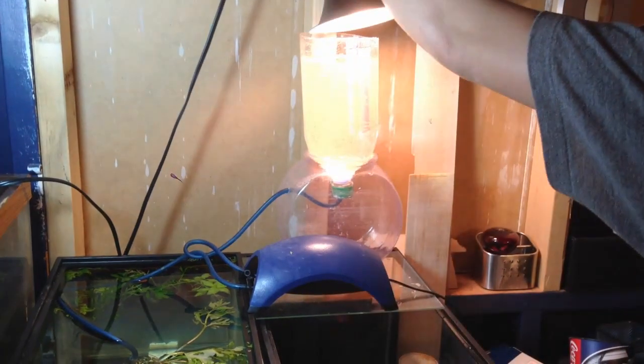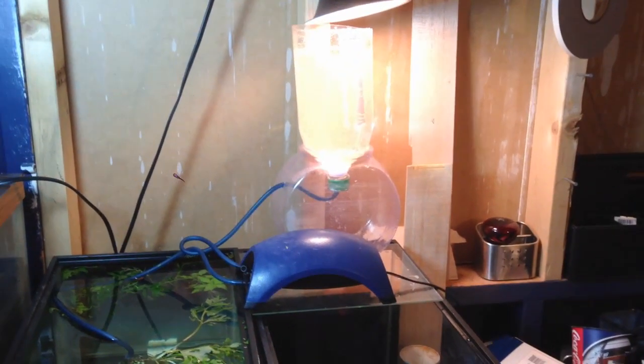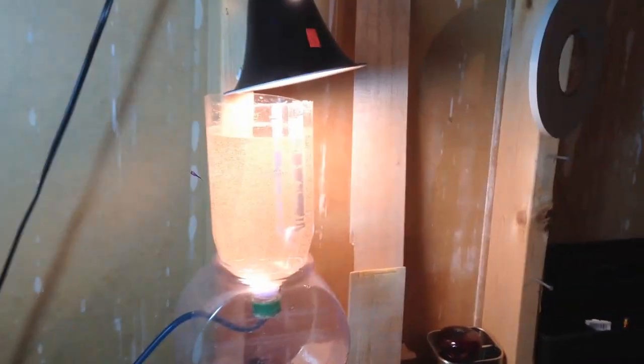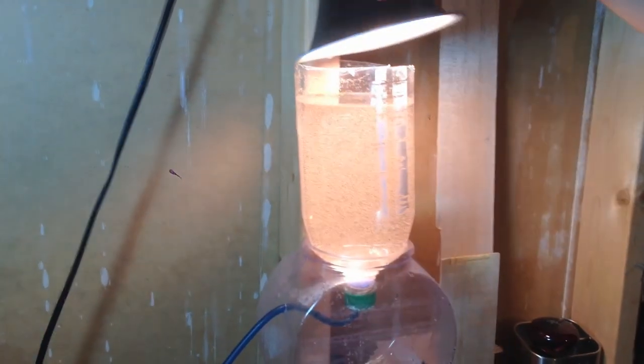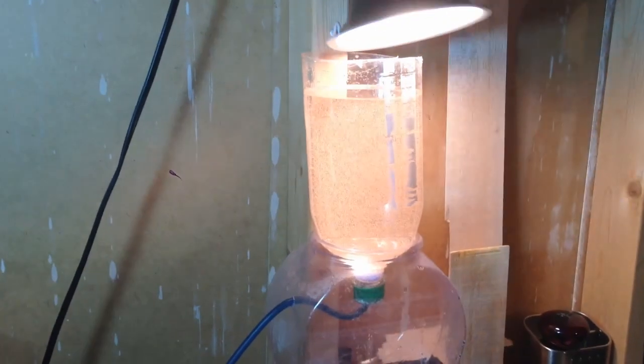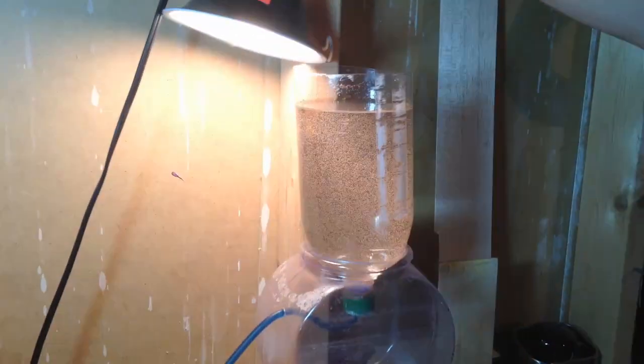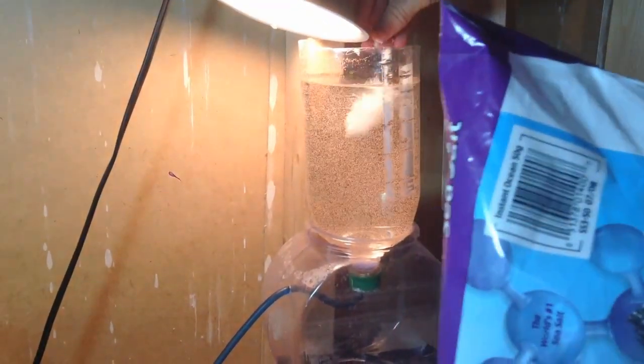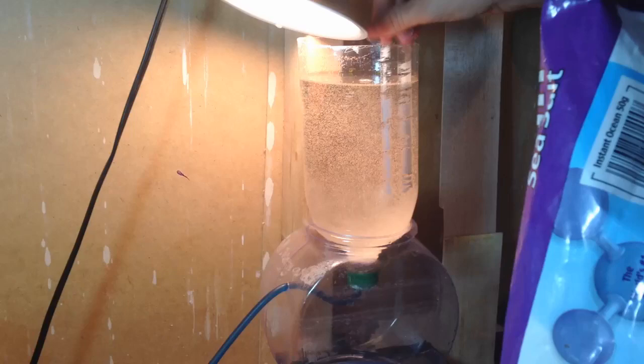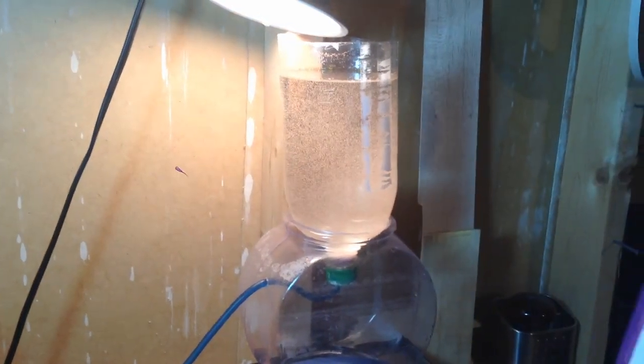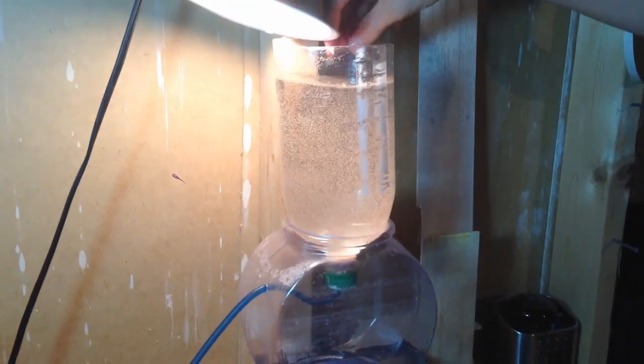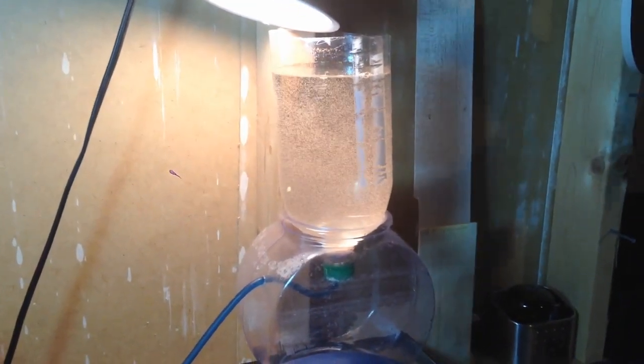Now you want to get a couple pinches of salt from Instant Ocean. It says a half cup per every gallon. But this is about one liter, maybe a little bit more. And brine shrimp don't need as much salt. So I'm just gonna get a few pinches. All right. That's good.